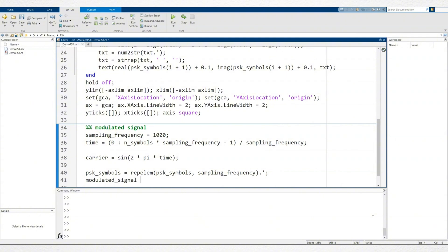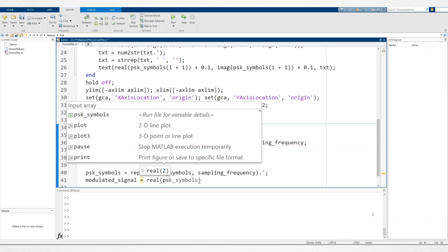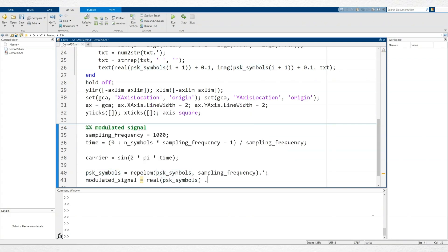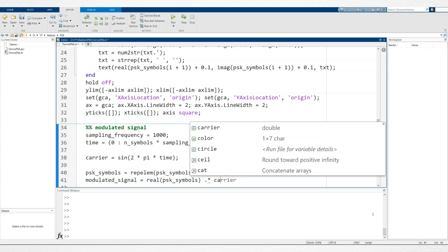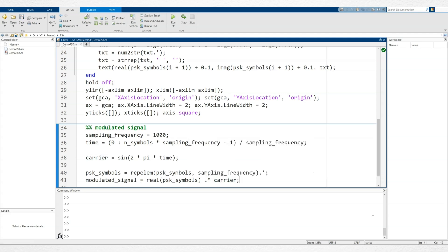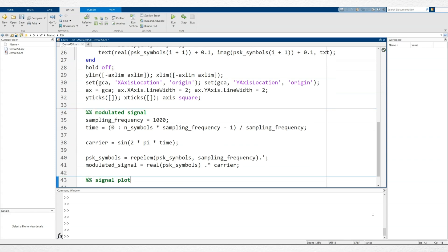If the symbol is 1, the carrier wave remains unchanged, but if it's negative 1, the phase shifts by 180 degrees. Note that for BPSK, we only need the real part of the PSK symbols, as they contain only 1s and negative 1s.